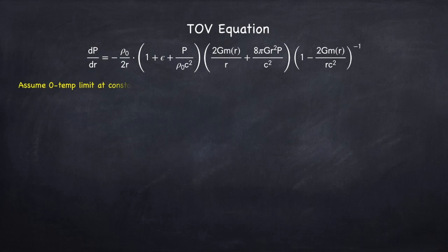For a neutron star, we're going to assume a zero temperature limit and a constant density. Now neutron stars actually have a high temperature, so the zero temperature limit doesn't actually mean the temperature is zero. It means that it's low compared to the chemical potential. I covered this in Stellar Physics 2a through 2c when I went over thermodynamics.